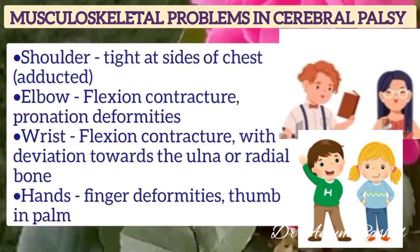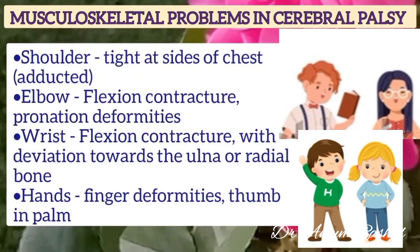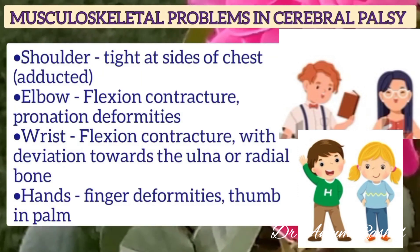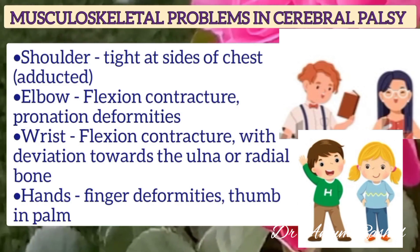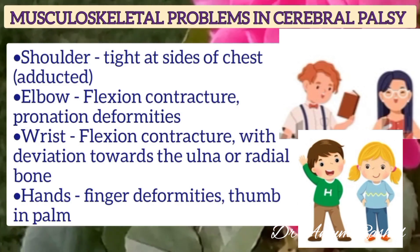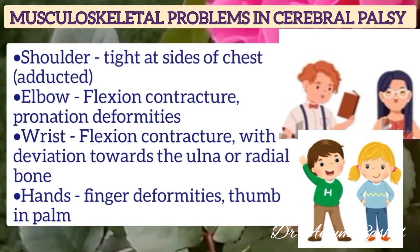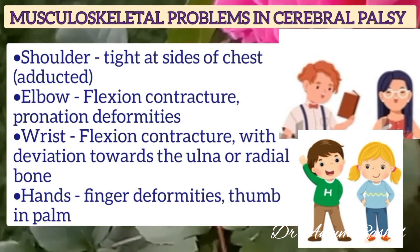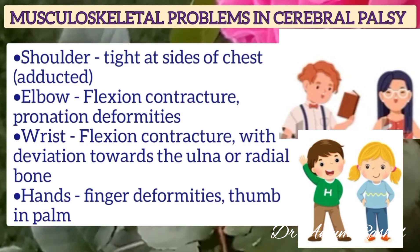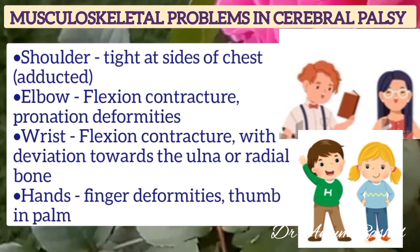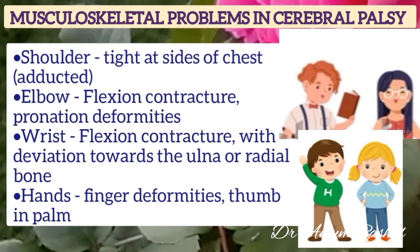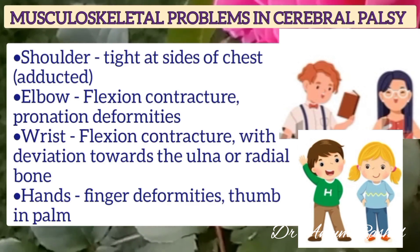In cerebral palsy, the shoulder is usually adducted in the affected limb. The elbow has flexion contracture and pronation deformities. In the wrist, there is flexion contracture with deviation towards the ulna or radial bone. In the hands, there are finger deformities with thumb in the palm.